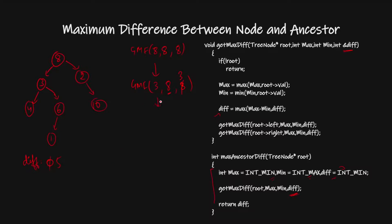The left child is 4. I am passing max = 8 and min = 3. Now max(8, 4) = 8 and min(3, 4) = 3, so neither max nor min changes. Its left is null, so I return. Its right is also null, so I return. Node 4 is done. Then I go to its right child, which is 6. With max = 8 and min = 3, nothing needs to be updated for node 6.